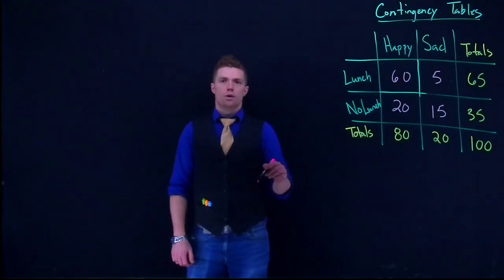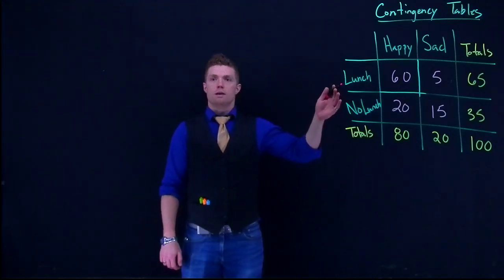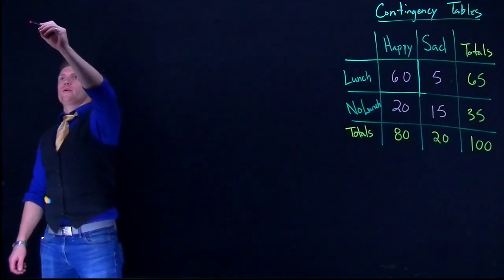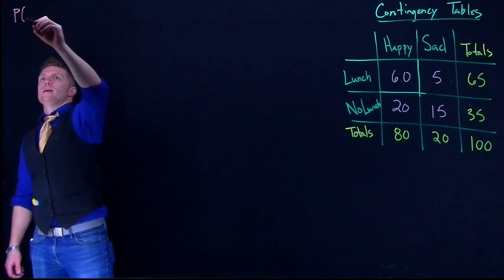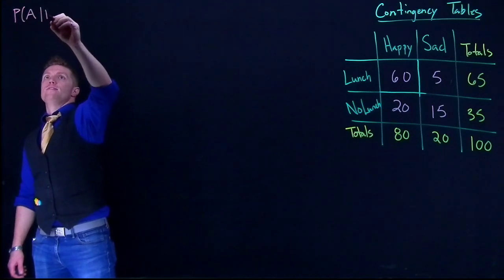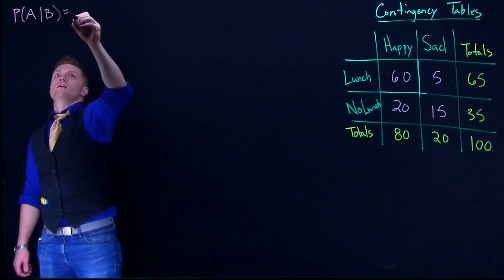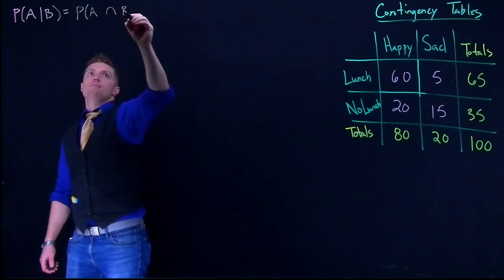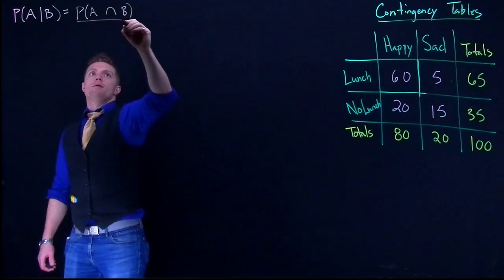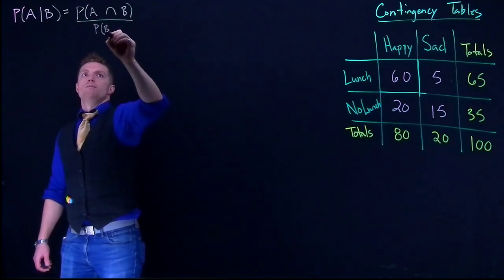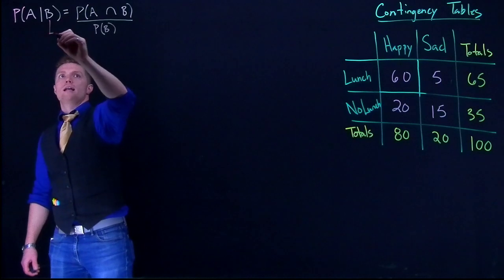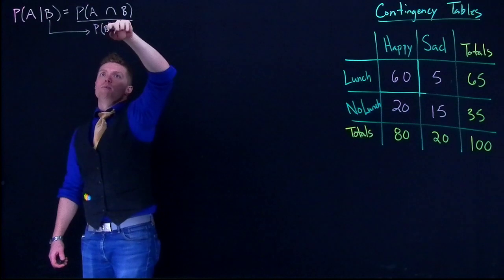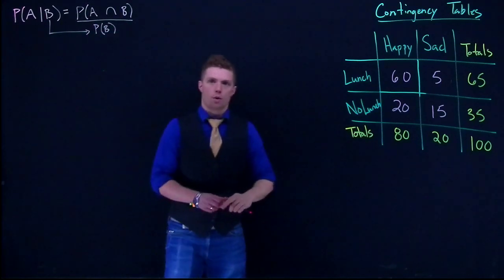Let's continue our example of our contingency table but now apply it to conditional probabilities. Quick review: a conditional probability is the probability of A given that B has occurred, equal to the probability of A intersect B divided by the probability of B. Note that the second event is the probability of the event in the denominator.